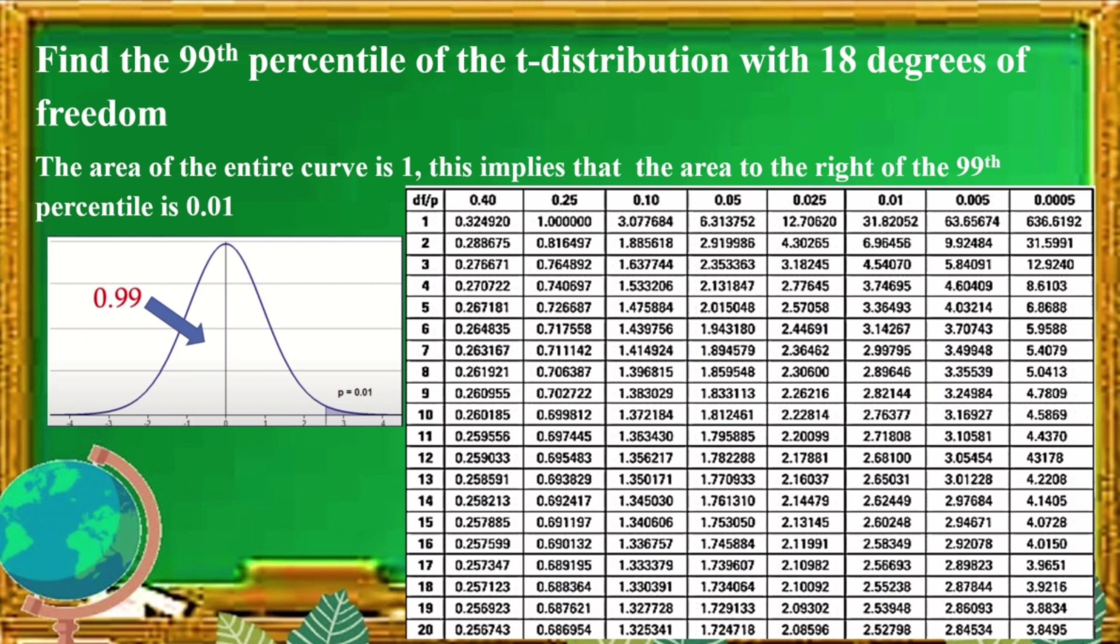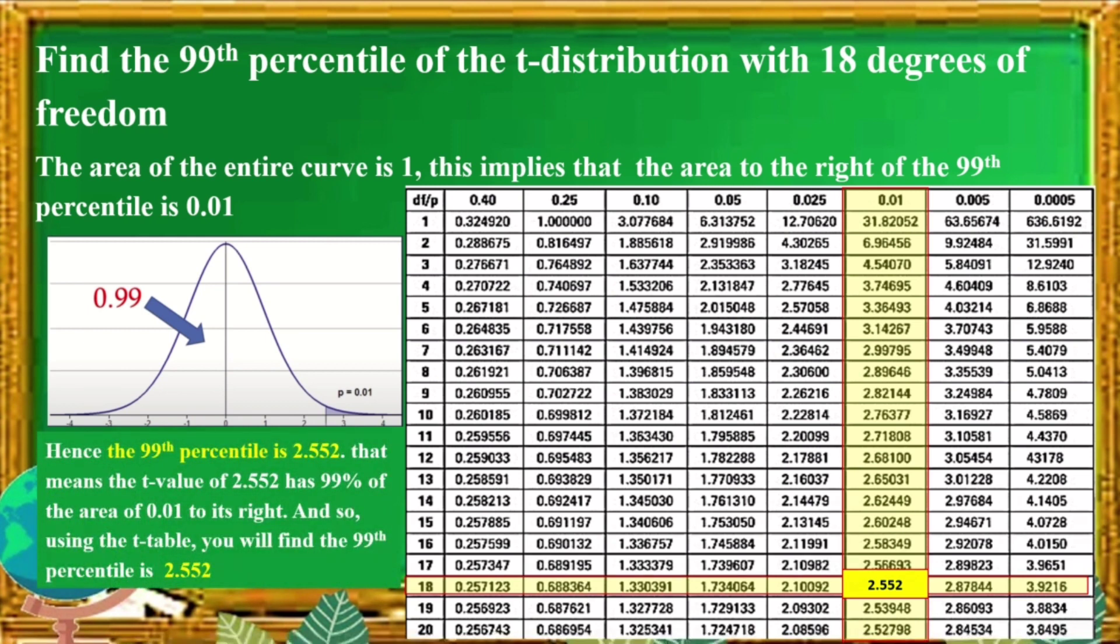So, from 0.01, we just need to find what T value it corresponds to in the T table. So, using our given which is 99th percentile or 0.01, that's our area in the right tail area. And the degrees of freedom which is 18. There, that's our degrees of freedom. Area, 0.01. Degrees of freedom, 18. So, the intersection is 2.55238 or round off, 2.552. That is the T value. So, hence, the 99th percentile is 2.552. That means, the T value of 2.552 has 99% of the area to its left and 0.01 to its right. So, using the table, you will find the 99th percentile is 2.552.